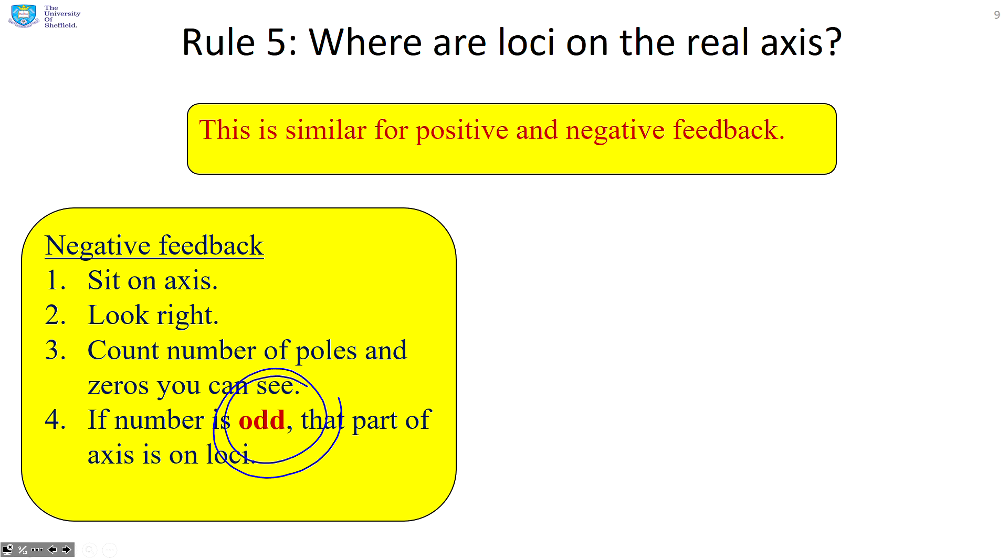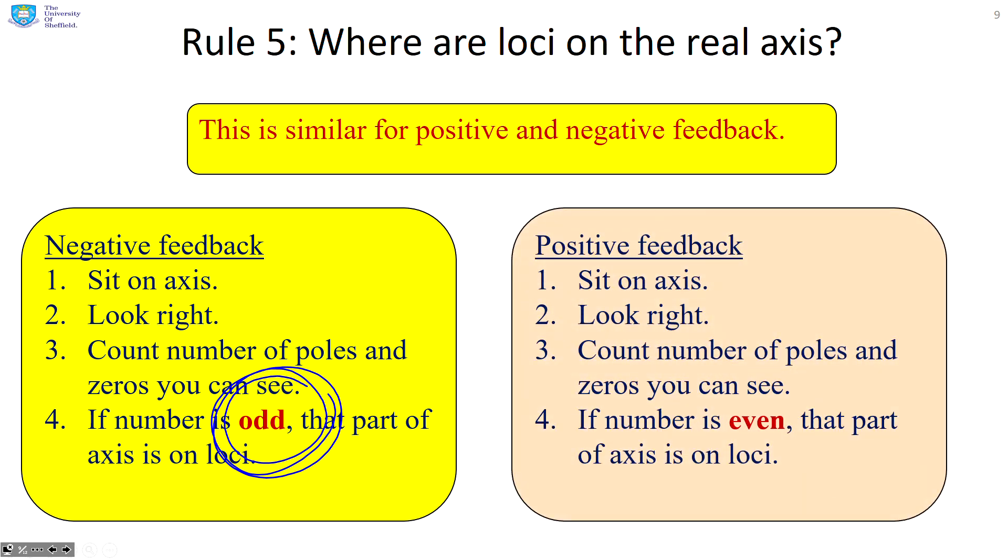And if it was odd, we said the loci was on the axis. Well, what about positive feedback? You'll see the steps are almost identical and there's only one difference. You're counting even numbers rather than odd numbers.